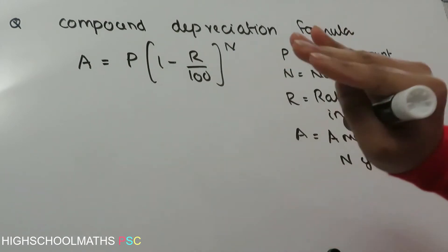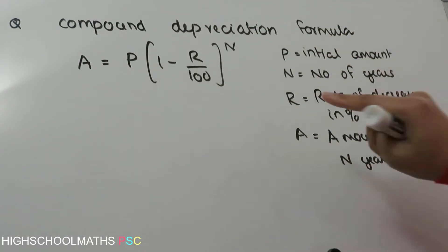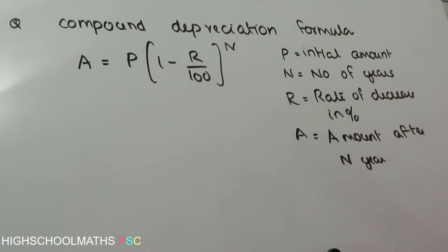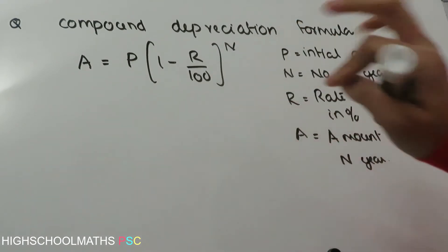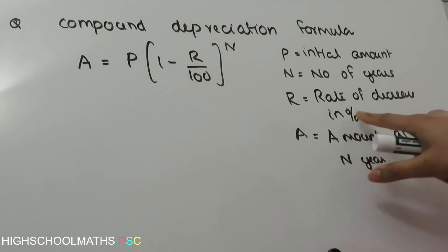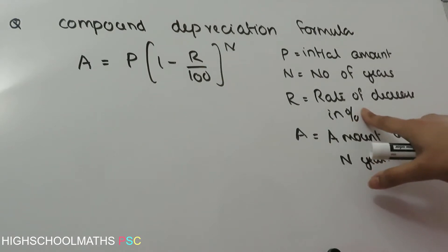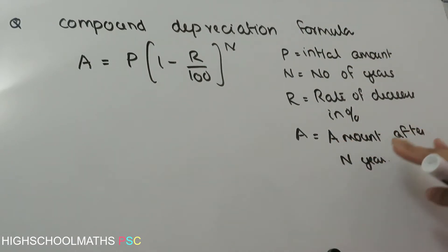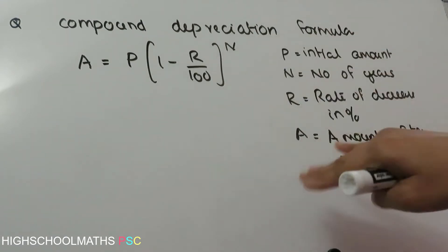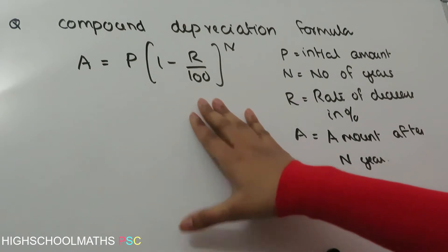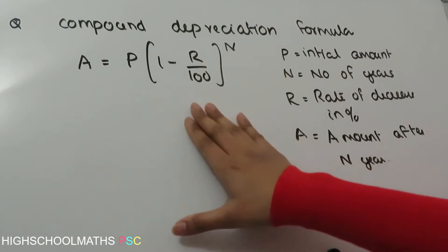Here, P is the original amount. In this case, n is the number of years, which is 3 years. r is the rate of decrease in percentage. A is the amount after the period of time — that is the amount after n number of years.